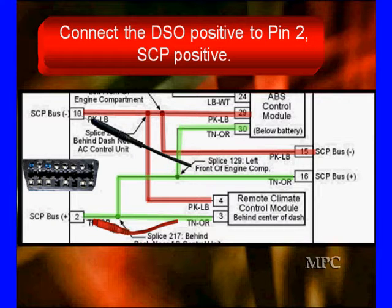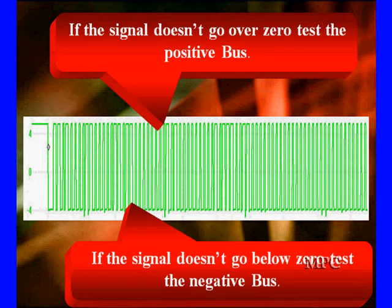As we said before, our hookup is going to be done very specifically. The red lead goes to pin 2. The black lead goes to pin 10. This is the signal.